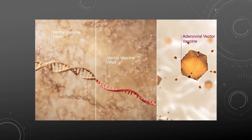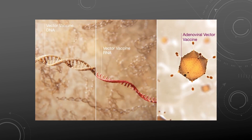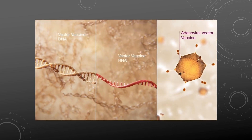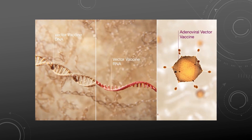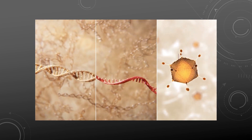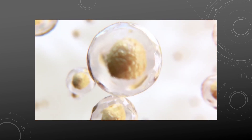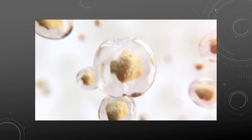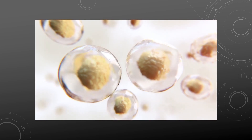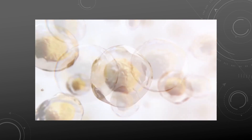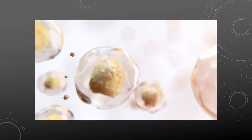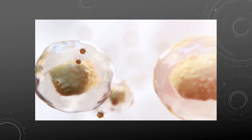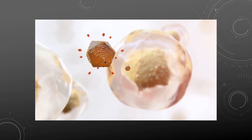The human cell line is engineered to contain the missing adenovirus genes so that when the vector vaccine is introduced, it can infect the cells and use the cell machinery and missing viral genes to replicate.